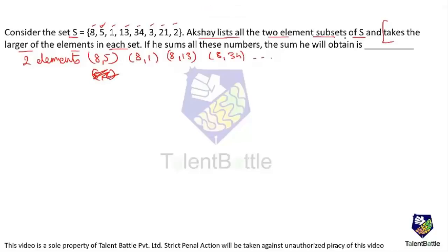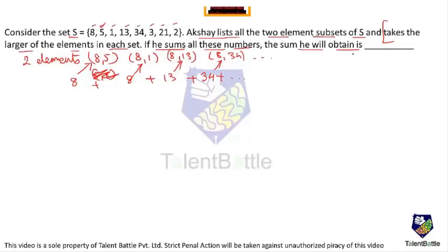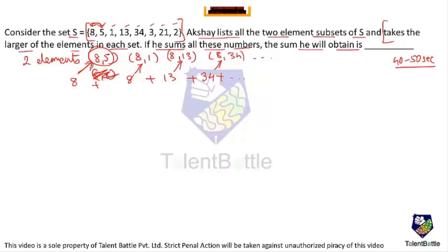This looks complicated but the answer can be obtained in about 40–50 seconds. The best approach is to arrange all numbers in increasing order: 1, 2, 3, 5, 8, 13, 21, 34. Now for each number, determine how many subsets it is the largest element of, and count accordingly.